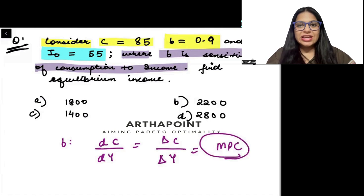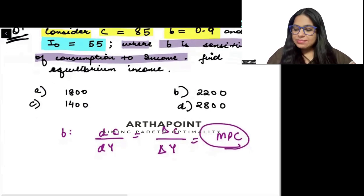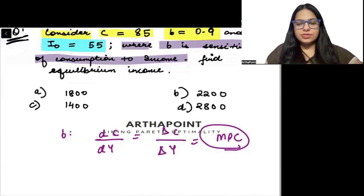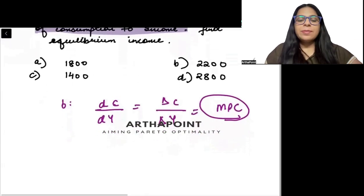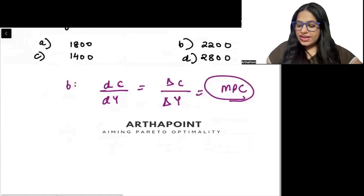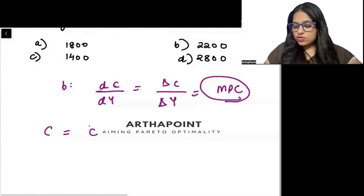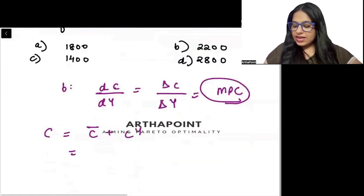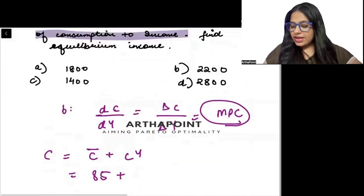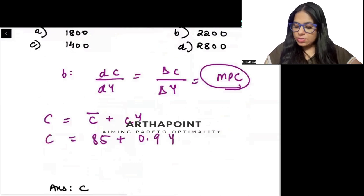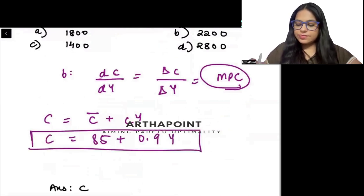So what will be B beta? Marginal propensity to consume. So here is the trick that they have not given what the consumption function is, but they have given you marginal propensity to consume is 0.9. So I can write my consumption function as C bar plus cy. So I am going to consider C bar as 85 and small c as 0.9y and this will be my consumption function beta.